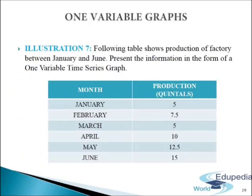One variable graphs: these graphs represent values of only one variable on a graph paper with respect to some time period. Time is taken along the x-axis and the values of the variable are taken along the y-axis. The values of the variable are plotted against the corresponding time periods. The plotted points are joined by straight lines. The graph so drawn shows a trend representing variations in the variable through the fluctuation of the line or curve. Let us understand this with the following illustration: we have a table showing production of a factory between January and June, and we have to present this information in the form of a one variable time series graph.